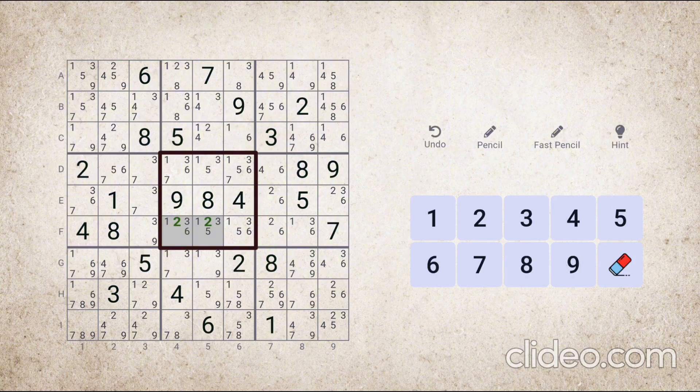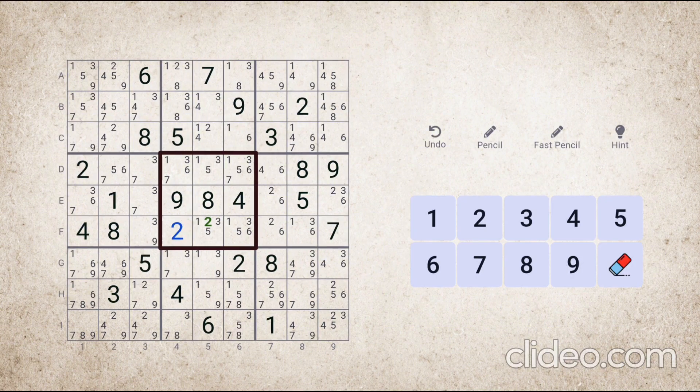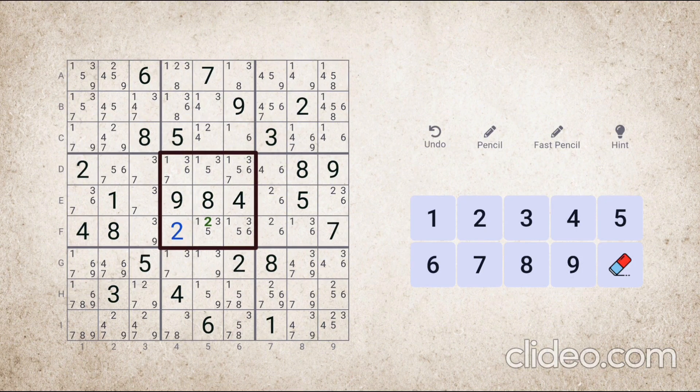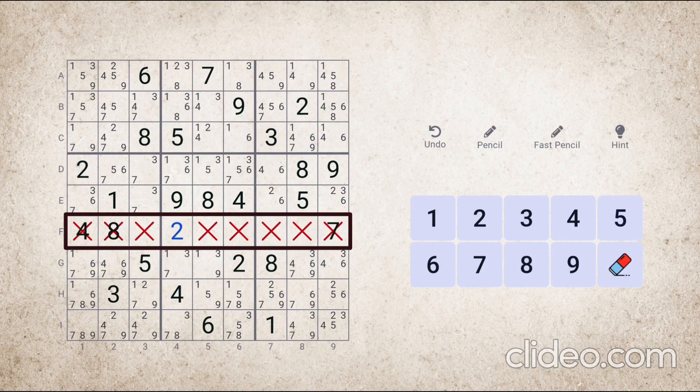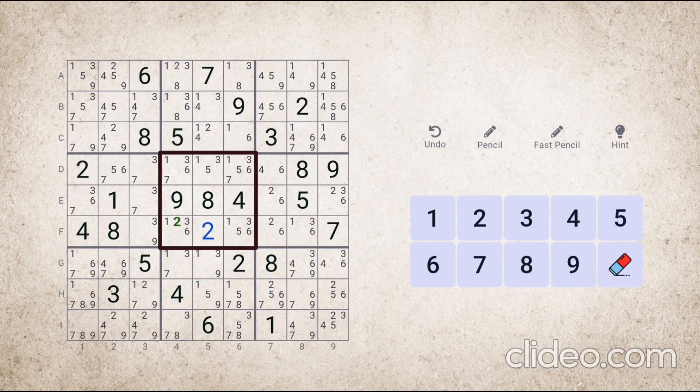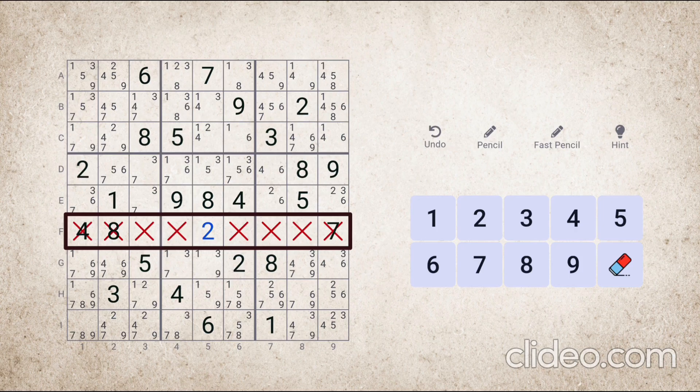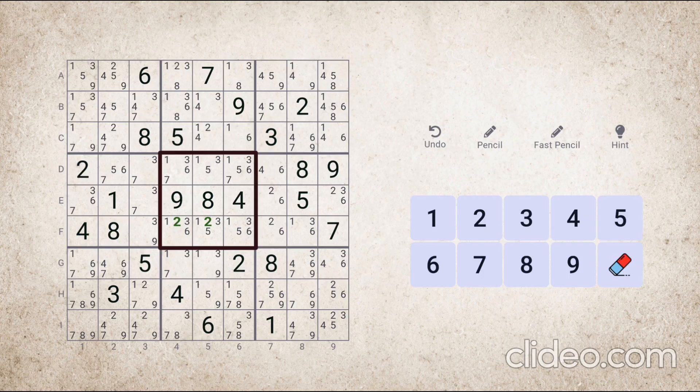Now, if we place number two here, then if number two appears anywhere in this row, it has to be removed. Or if we place number two here in this block, then it cannot appear in these other cells in this row. Now the common point in both these scenarios is that number two absolutely cannot come in these cells.